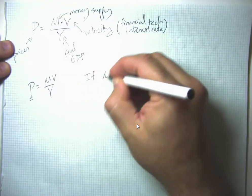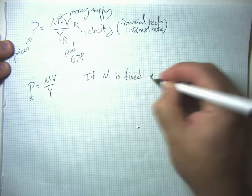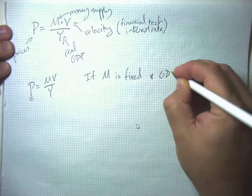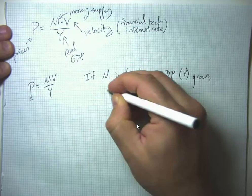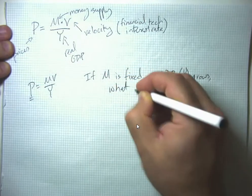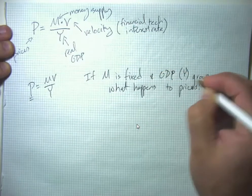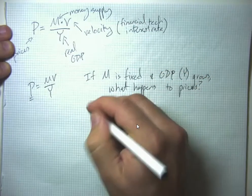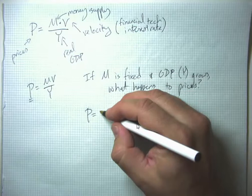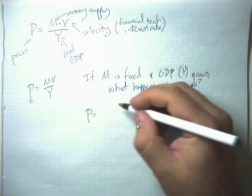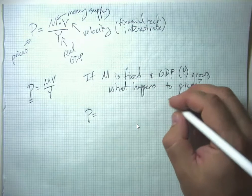For instance, if M is fixed and GDP Y grows, what happens to prices? You can maybe see that prices are going to go up, but let's construct a numerical example because you may not have a mathematical intuition here.